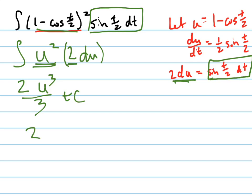So I have 2 times. Now I'm going to substitute u back in, which is 1 minus cosine t over 2 cubed all over 3. Or I could have put 2 thirds out in front. It doesn't really matter. Plus c.